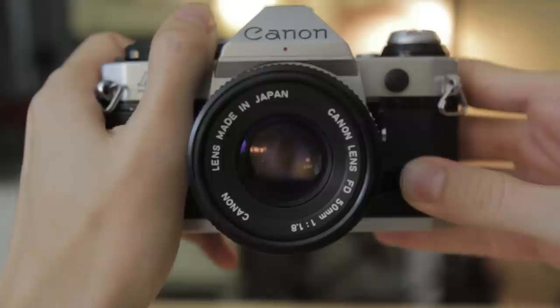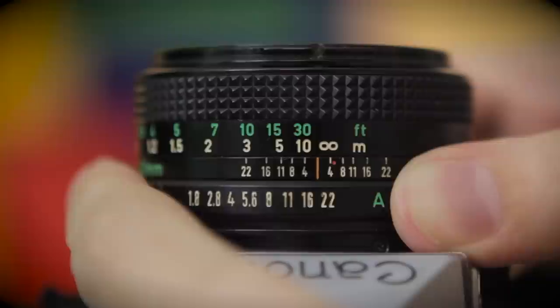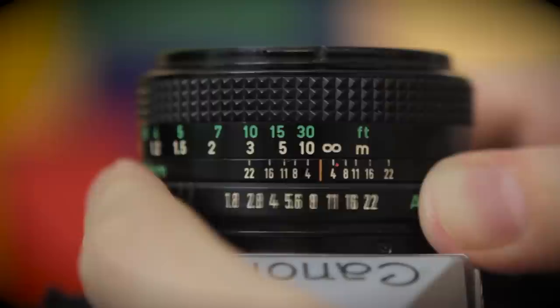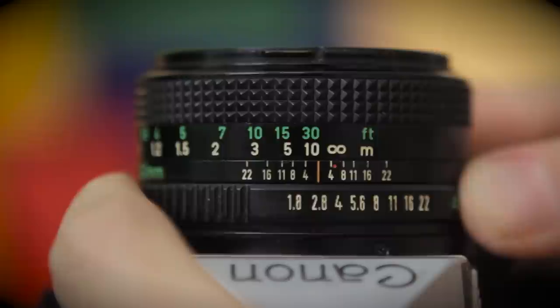Aperture refers to the opening of the iris inside the lens, as you can see here. Aperture is measured in the focal ratio, which is the ratio of the opening of the aperture to the opening of the lens. So in other words, an f2.8 aperture means that the aperture opening is 2.8 times smaller than the overall opening of the lens.